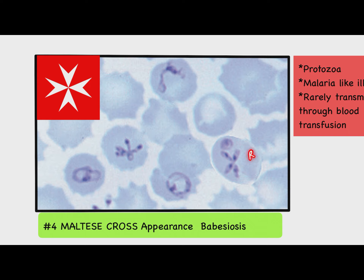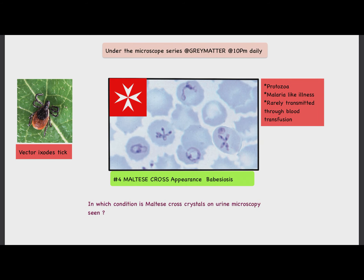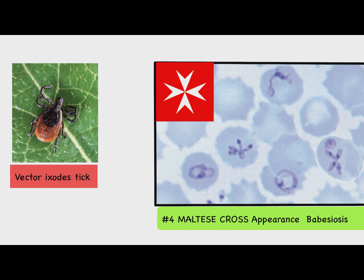This is your RBC, and there is a form of Babesia which is present inside the RBC during its pathogenesis. This is the Maltese cross appearance — the Babesia form which appears as a tetrad, also known as Maltese cross appearance.